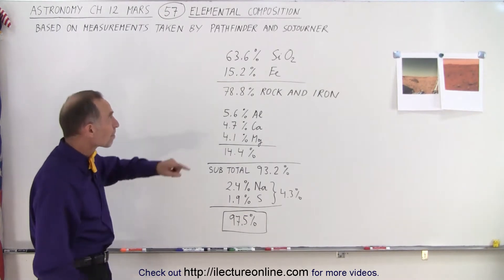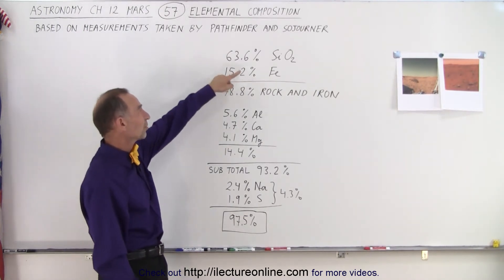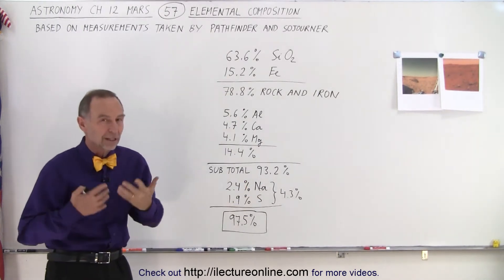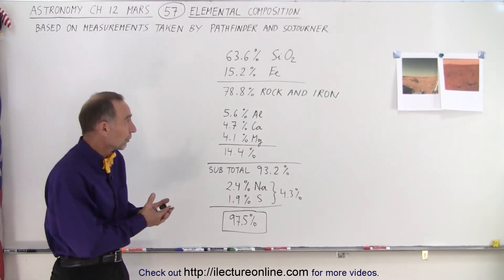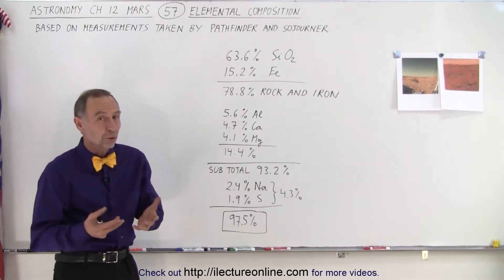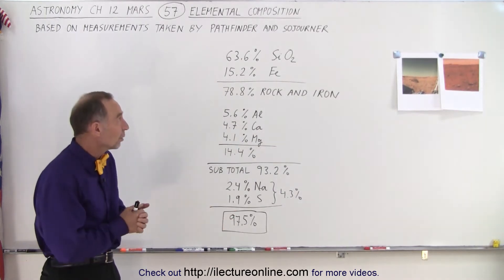Well, we found that it was about 63.6% silicon dioxide. Of course, silicon dioxide is the primary constituent of sand and rock. And so just like on the Earth, a very high percentage, almost two-thirds of what they found was indeed rock material, silicon dioxide.